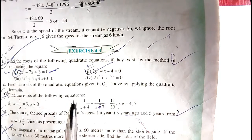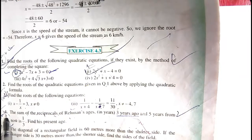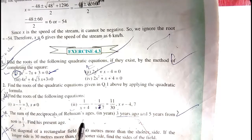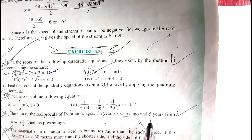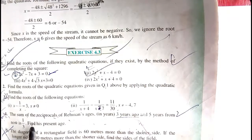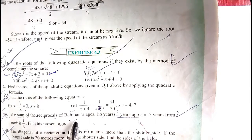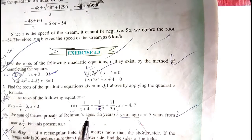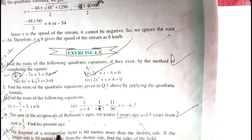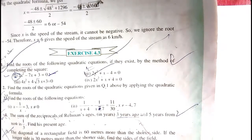Aaj ke class mein ham Exercise 4.3 Question Number 4 solve karne wale hain. Yeh question hai: 'The sum of the reciprocals of Rehman's age in years three years ago and five years from now is one by three. Find his present age.' Is question mein hamein nikaalna hai ki Rehman ki present age kya hai.